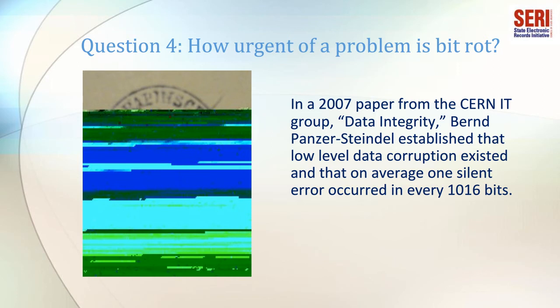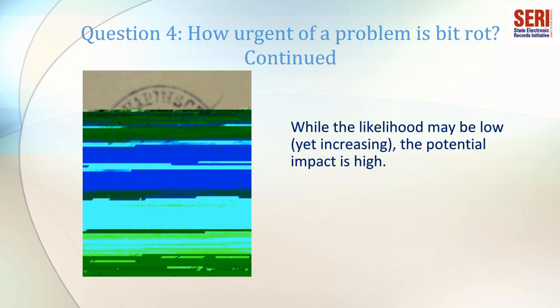Question 4: How urgent of a problem is BitRot? Most disk, disk controller, and higher-level systems are subject to a small degree of unrecoverable failure. With ever-growing disk capacities, file sizes, and increases in the amount of data stored on a disk, the likelihood of data decay and other forms of uncorrected and undetected data corruption increases. In a 2007 paper from the CERN IT group, Bernd Panzer-Steindl established that low-level data corruption existed and that on average one silent error occurred in every 1,016 bits. Statistically speaking, the risk of your important files succumbing to BitRot probably isn't very high, though it is increasing.